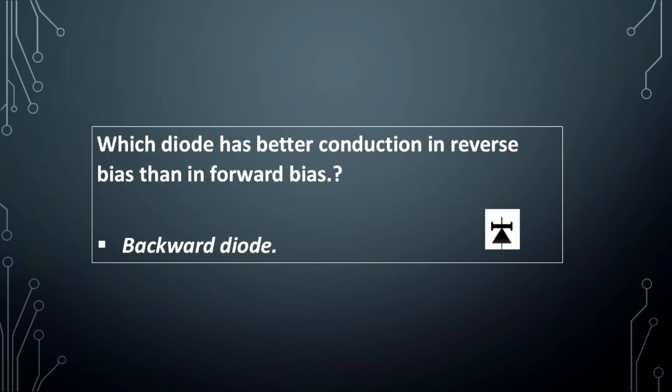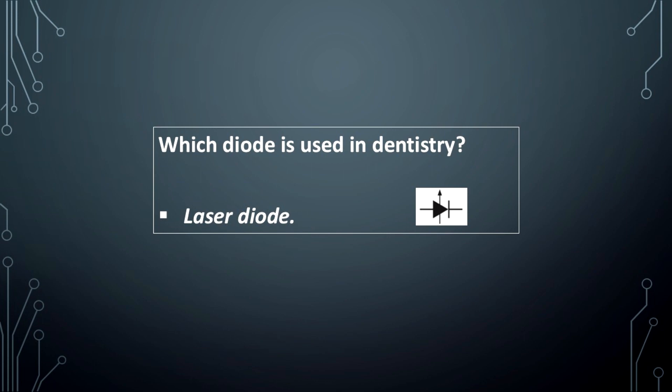Which diode is based on thermionic emission? Vacuum diode. Which diode acts as a light sensitive detector? Photodiode.